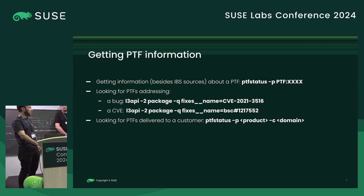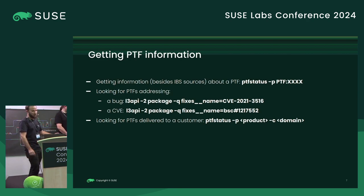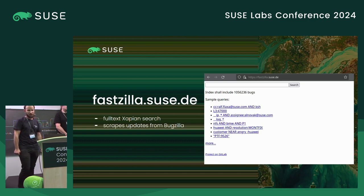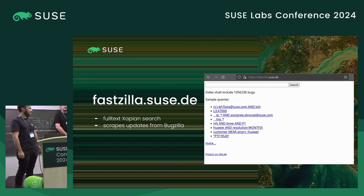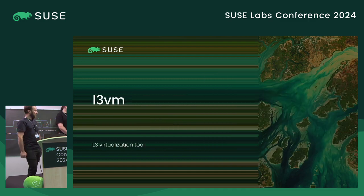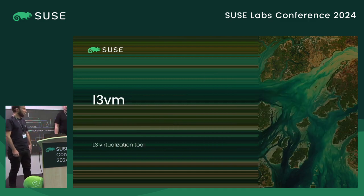The PTFDB is reachable to anyone — at least this part of the database is public. You can also check the maintenance status of PTFs. Also in the scope of L3, FastZilla is maintained by us, mostly by Elish. It's a very fast full-text search of Bugzilla. I think it's very popular, so no need to provide more details. With that, I'd like to hand over to Josef to cover L3VM.